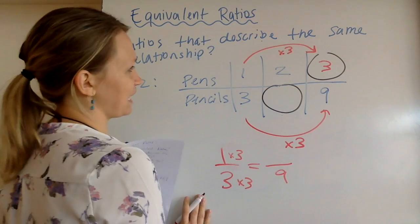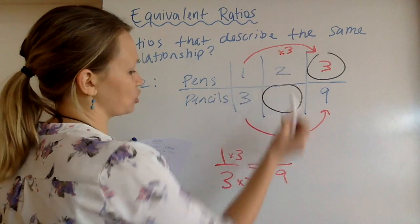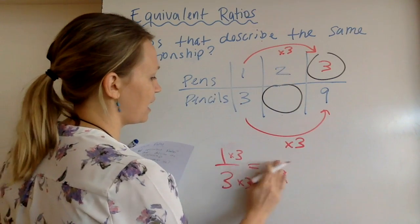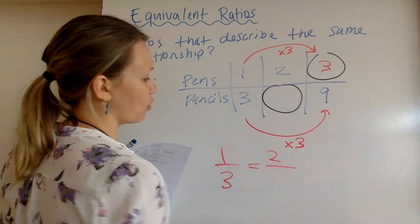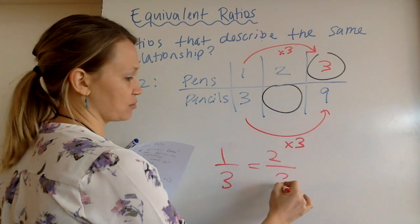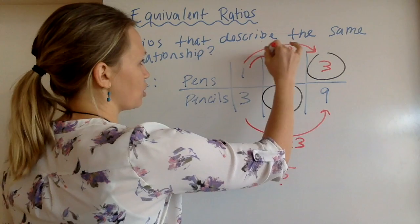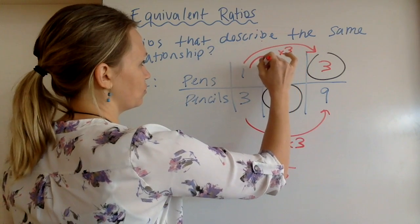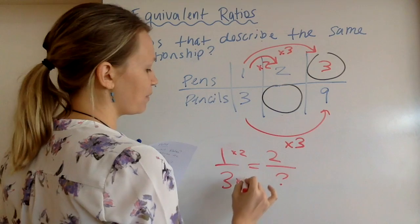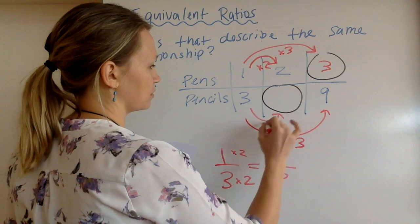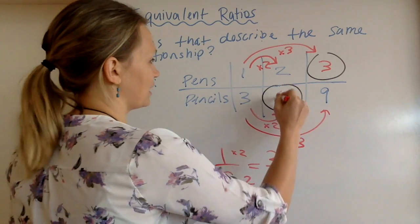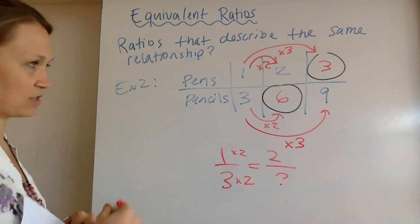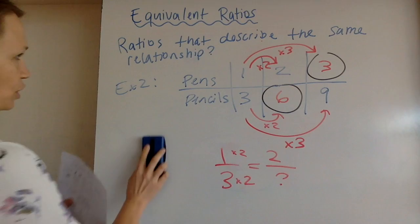All right, what about the second mystery number? Well, I'm going to look at its counterpart in the top, right? I'm going to say one to three is equal to two to what? This being my question mark. So, well, if I have to multiply the top by two, then I have to multiply the bottom by two. So whatever you do to the top, you do to the bottom, or vice versa. So then I can figure out that that's six as well.